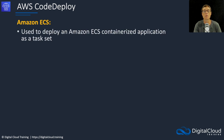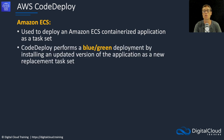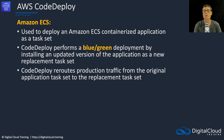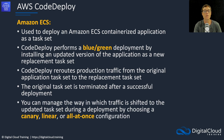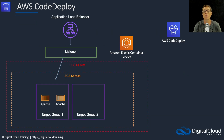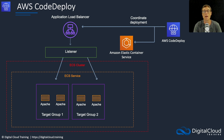Next, we have the ECS deployment type. This is used to deploy an ECS containerized application as a task set. CodeDeploy performs a blue-green deployment by installing an updated version of the application as a new replacement task set. It then reroutes production traffic from the original task set to the new task set, and the original task set is terminated after a successful deployment. Traffic can be shifted using canary, linear, or all-at-once configuration.